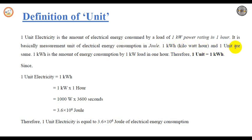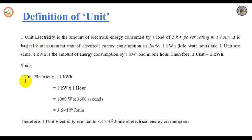1 kWh and 1 unit are the same. So 1 unit is generally equal to 1 kWh — one unit of energy is equal to 1 kWh. This means if you consume 1 kW of power in 1 hour, then it is termed as 1 unit of energy consumed. So 1 unit of energy equals 1 kWh, which is 1 kW multiplied by 1 hour.